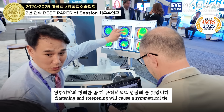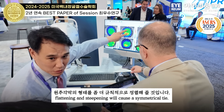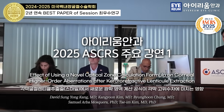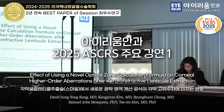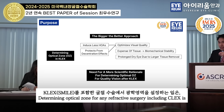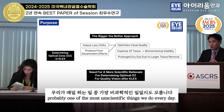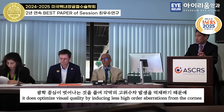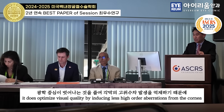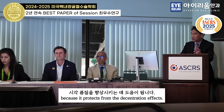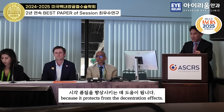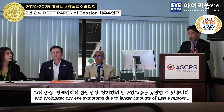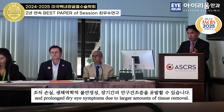Today I'll be talking about the effect of using a novel optical zone calculation formula on corneal high orders after CLEX. Determining the optical zone for any refractive surgery, including CLEX, is probably one of the most unscientific things we do every day. The bigger-the-better approach does optimize visual quality by inducing less high-order aberrations, but at the expense of tissue and biomechanical instability and prolonged dry eye symptoms due to larger amounts of tissue removal.